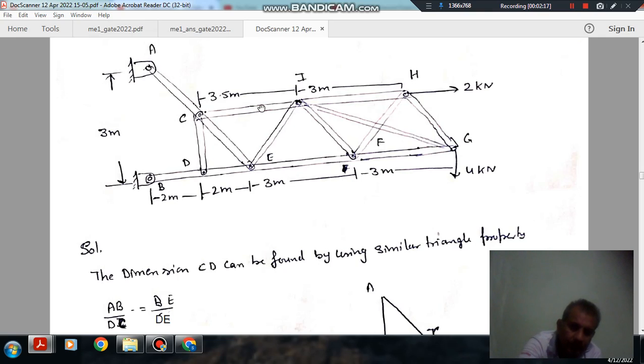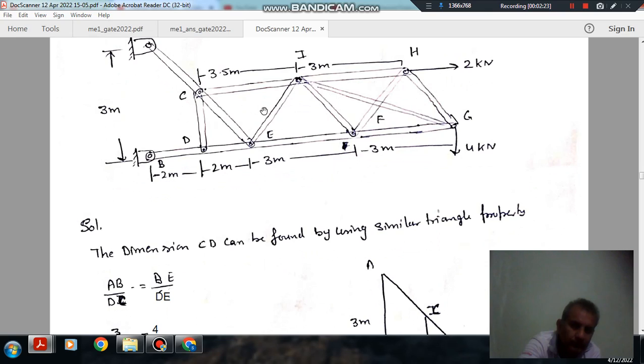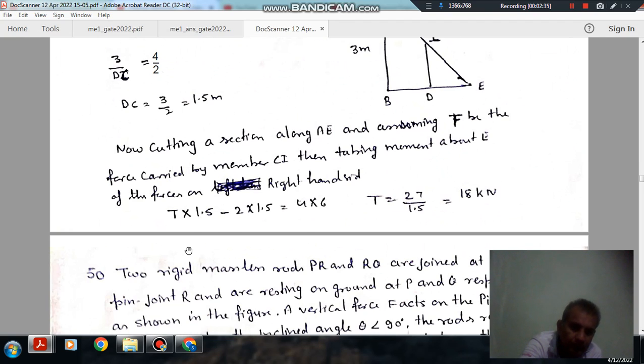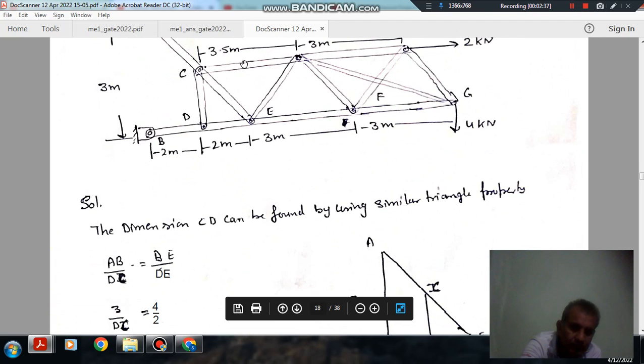And assume that the tension in member CI is just T. And the load is acting on the right side is 2 kilonewtons. So by using method of joints, taking moment about E from the right-hand side load, this is for T is in this direction.